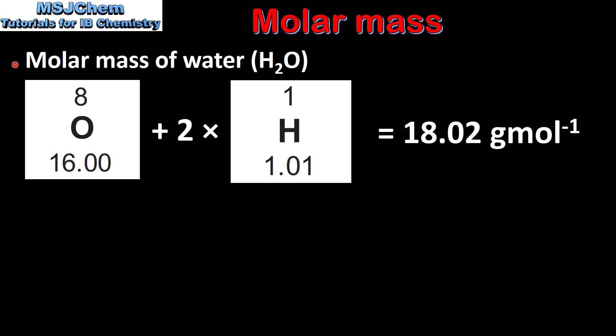Next we'll look at some examples starting with the molar mass of water. A molecule of water consists of one oxygen atom and two hydrogen atoms. So to find the molar mass we add the relative atomic mass of one oxygen atom and two hydrogen atoms, which gives us a molar mass of 18.02 grams per mole.